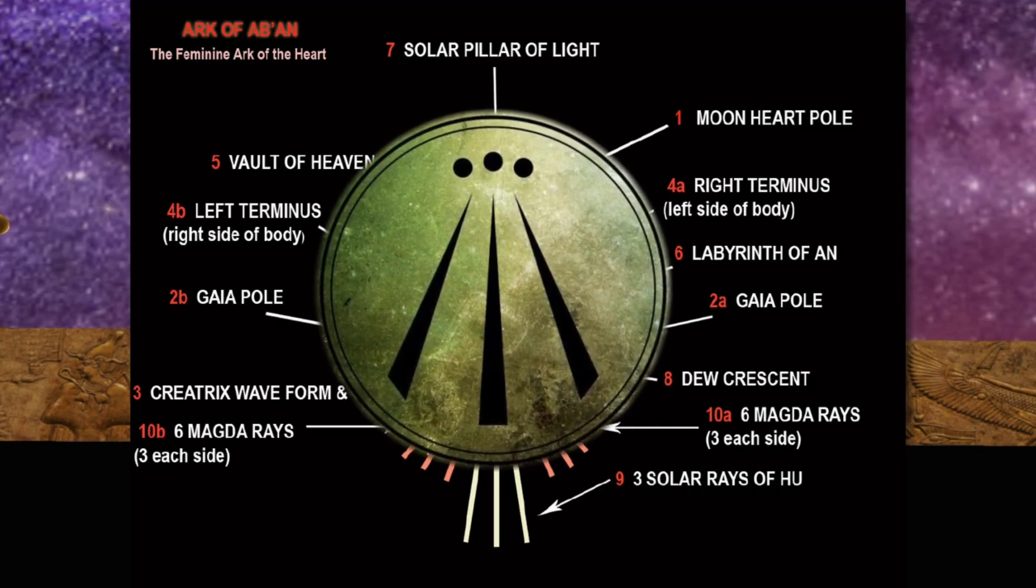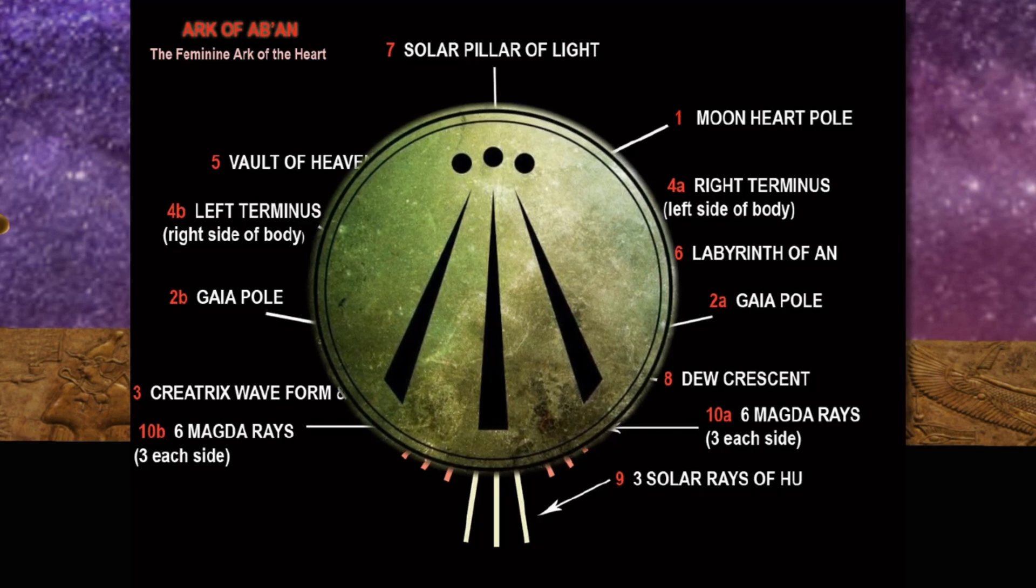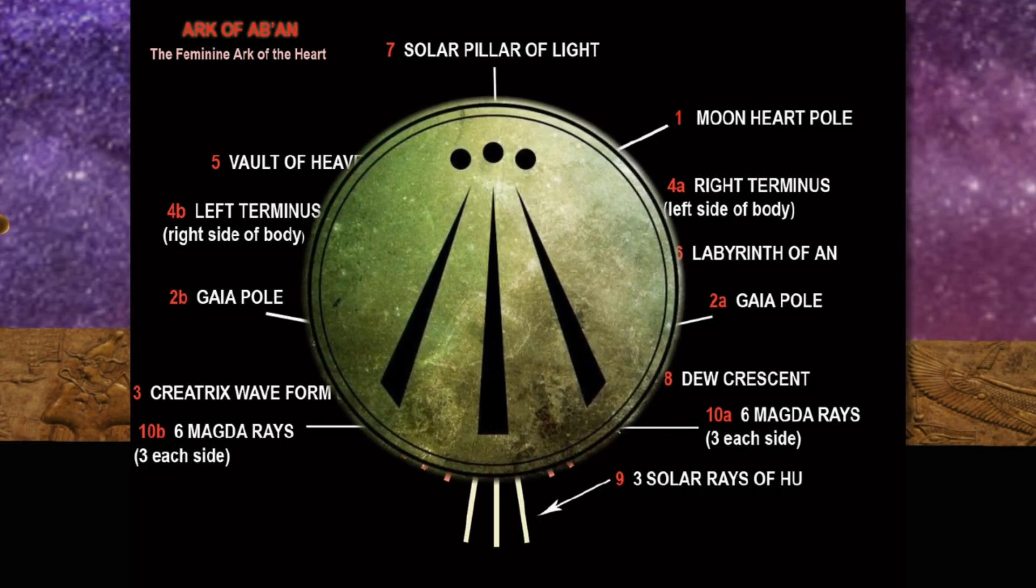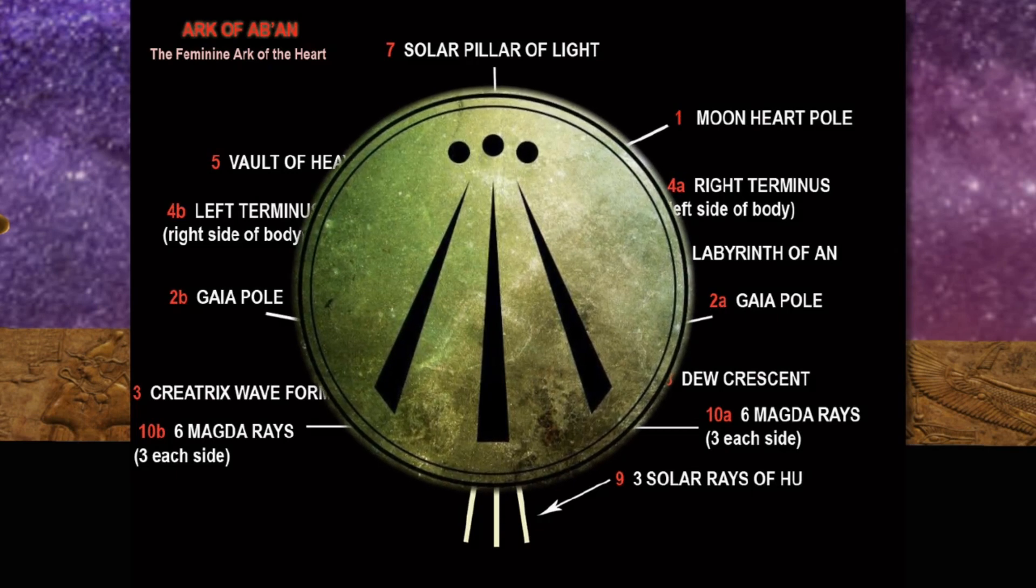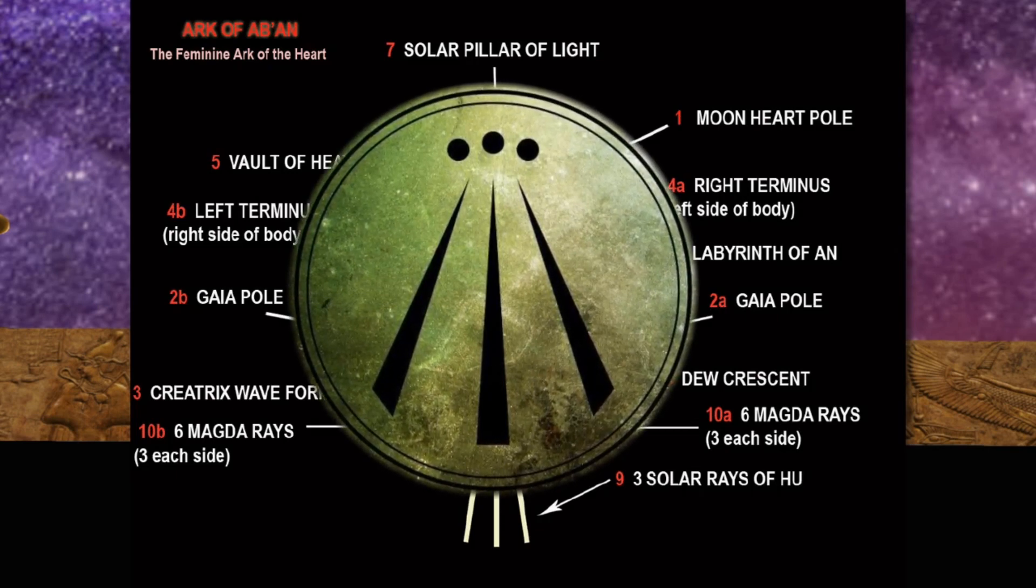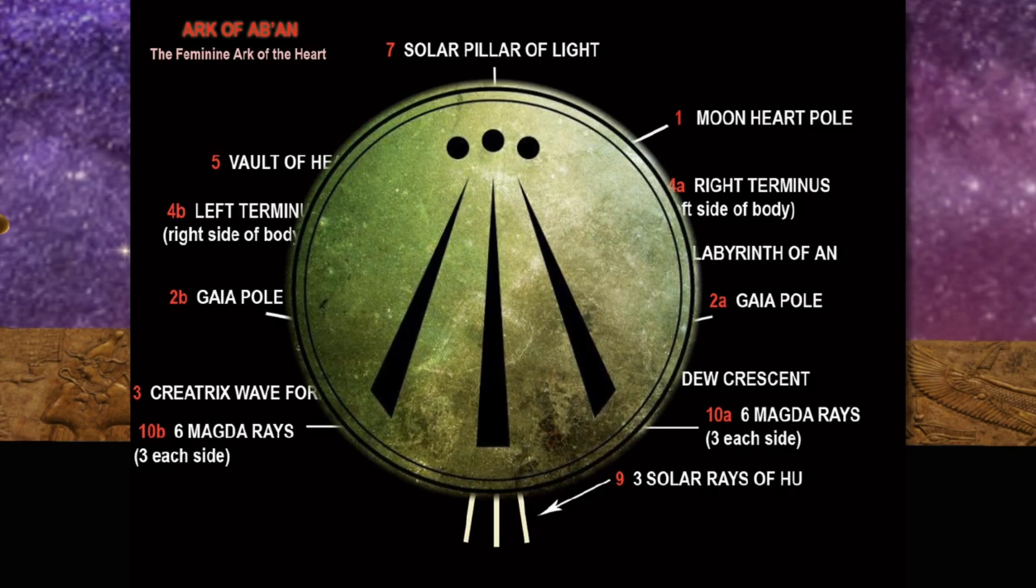The solar rays of Hu are the strength of the female heart and her body and mind. The ability of the woman to endure, to give birth, to open her body, mind and heart to creation.